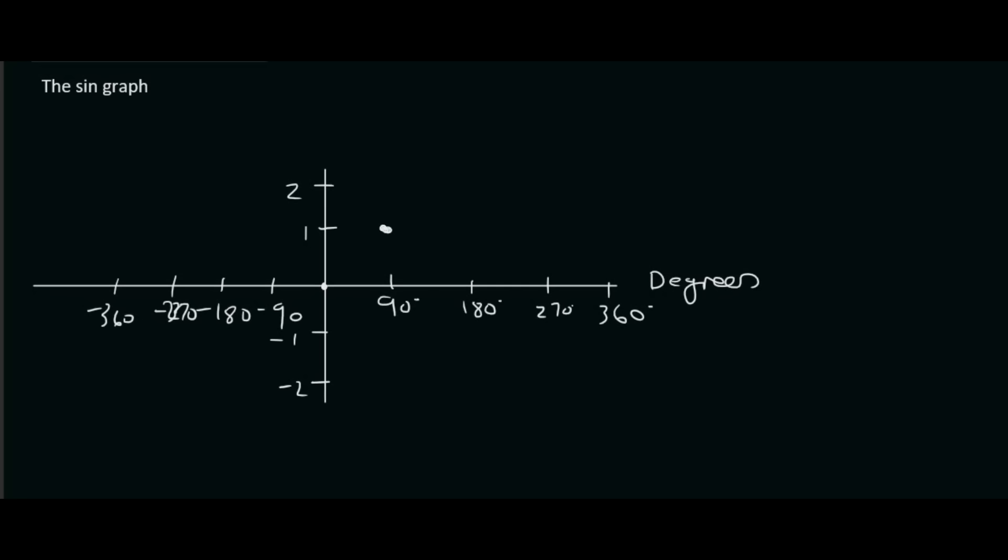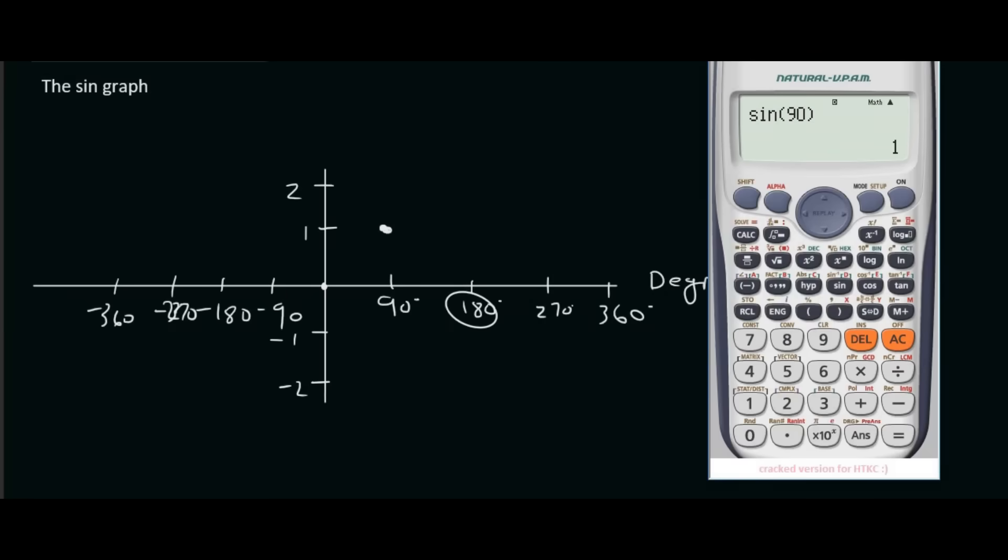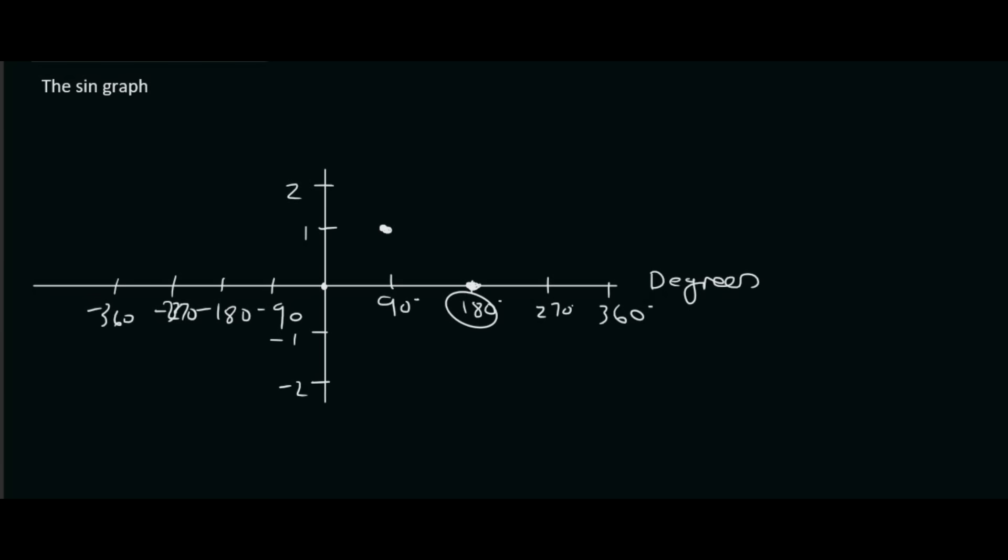Now I'm going to go to 180 degrees next. So if I say sine of 180, that gives me 0 again. And then I'm going to go to 270 degrees and 360. And if you put 270 degrees in the calculator, you should get a y value of minus 1. And then if you put an x value of 360, then you're going to get a y value of 0.